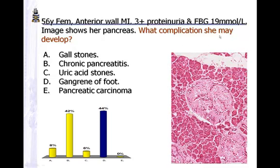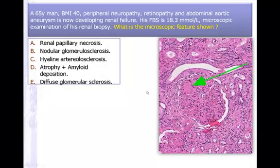What complications may she develop? Putting these features together, this is the terminal stage of advanced diabetes. In advanced diabetes, common complications include gallstones, chronic pancreatitis, uric acid stones, gangrene of foot, and pancreatic carcinoma — all can occur. But the commonest clinically would be gangrene of the foot.